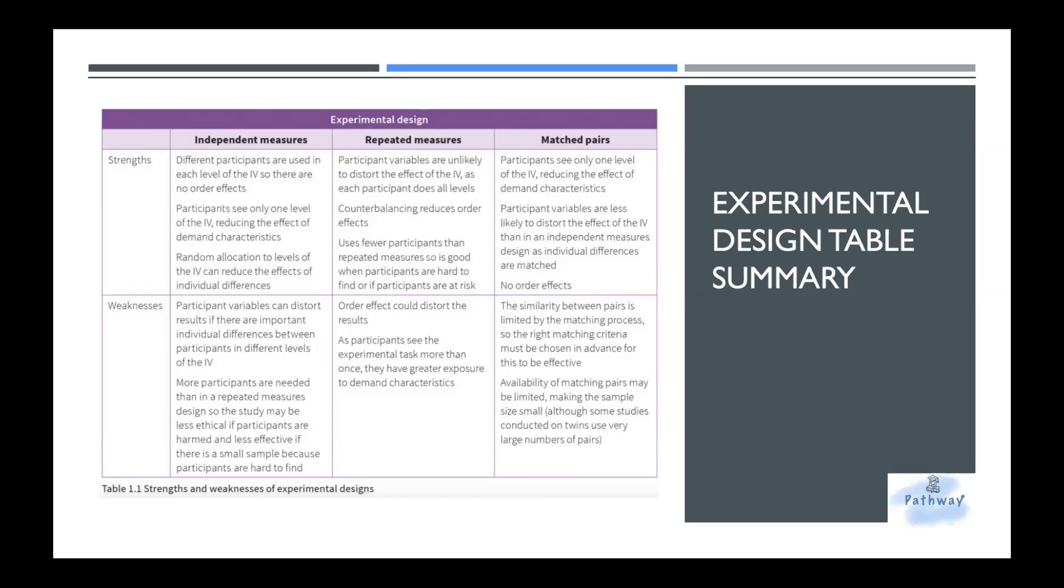Repeated measures. Well, you don't need that much people comparing to the matched pairs and independent variables. Participant variables are unlikely to distort. But you need to do the counterbalancing to reduce the order effects. It's also less time consuming. Order effects could distort the result. However, as the participants see the experimental tasks more than once, they might acquire the fatigue effect or the practice effect.